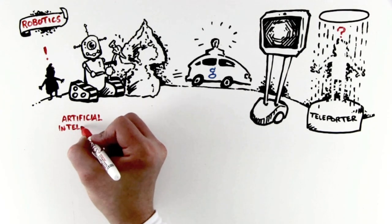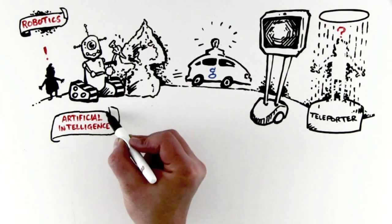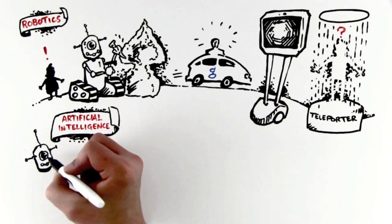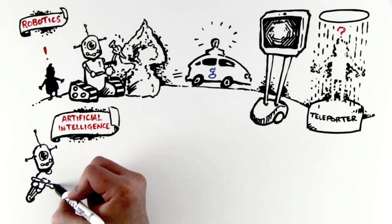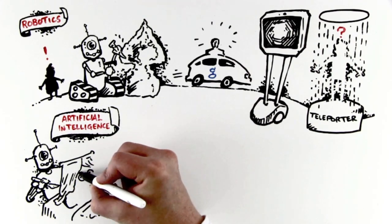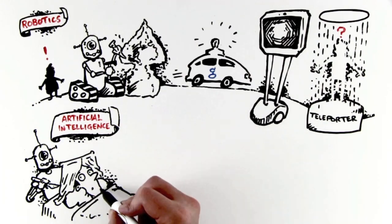But tomorrow's robots will be combined with another exponential technology, artificial intelligence, the ability of a computer to understand human language, take direction, provide answers and opinions, taking our robots from those that stock shelves to those you trust to expertly perform brain surgery.